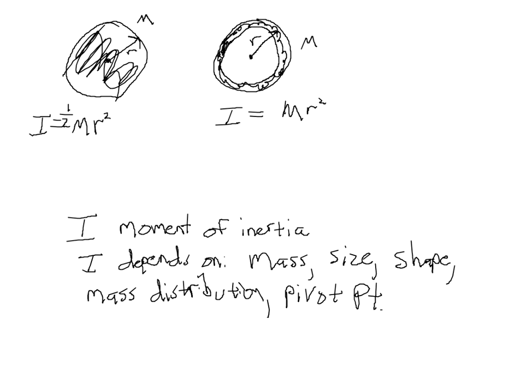And since torque equals I times alpha, if I apply the same torque to both of these objects, then this one will have a bigger angular acceleration because it has a smaller moment of inertia. It's just like if you apply the same force to a small mass, it will have more acceleration than a big mass.